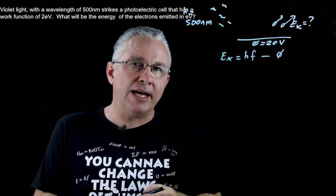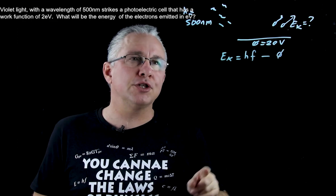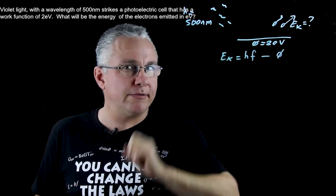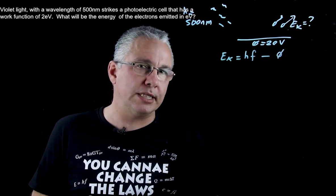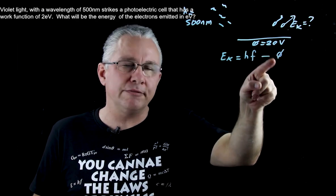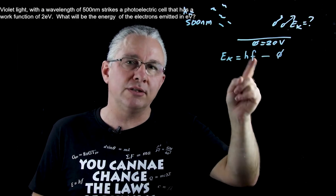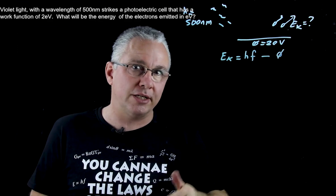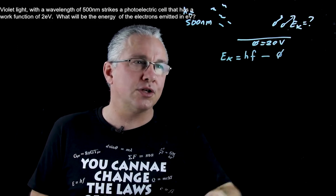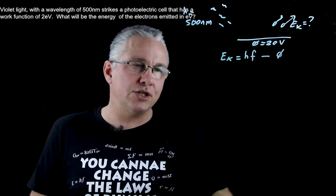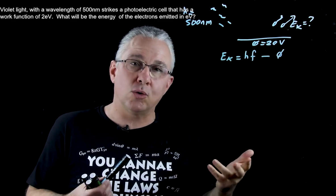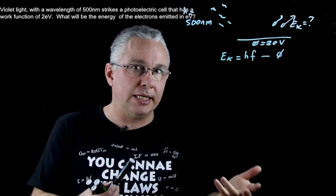We have two problems here. First, we're not given the frequency — we're given the wavelength — so we have to work out the frequency. Second, the work function is given in the non-SI energy unit of electron volts. So when we do this calculation we need to ensure that our photon energy is also in electron volts.